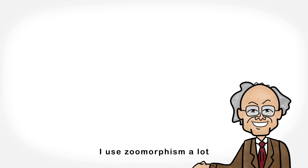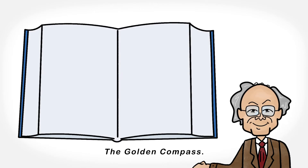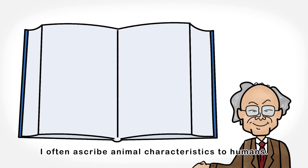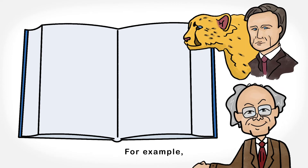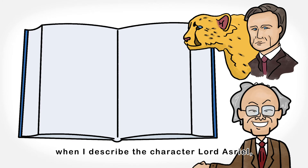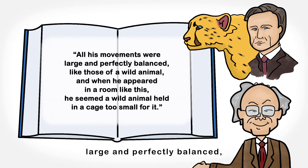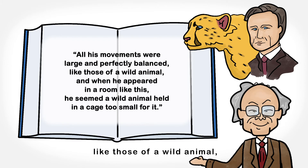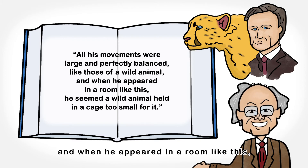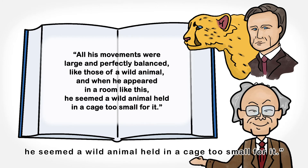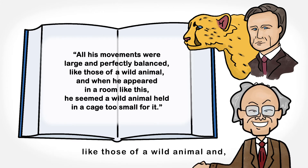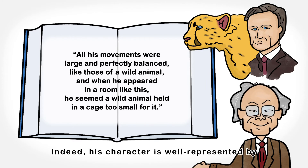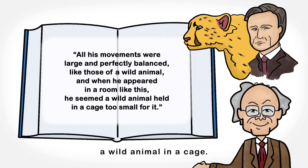I use zoomorphism a lot in my young adult fantasy novel, The Golden Compass. I often ascribe animal characteristics to humans. For example, when I describe the character Lord Asriel, I say: all his movements were large and perfectly balanced, like those of a wild animal. And when he appeared in a room like this, he seemed a wild animal held in a cage too small for it. Lord Asriel's movements are described like those of a wild animal.